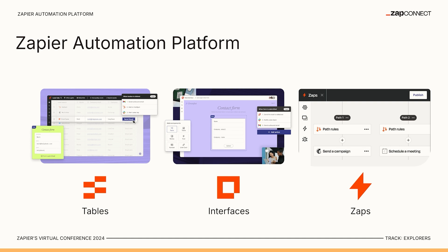And then lastly, you have Zaps. They are your brain — the workflow, automation, all the actions that you take. It connects your tool to all the third-party apps; there are 7,000 of them. And so with these three products, you can build almost anything you could imagine.